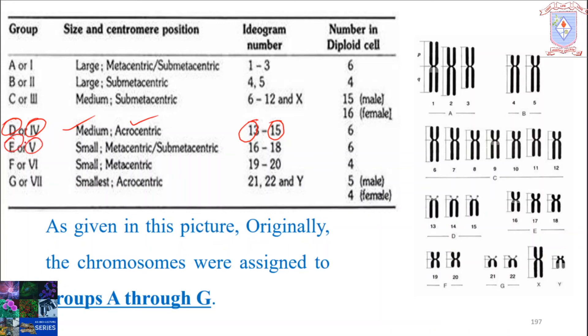Under Group E, or Group 5, the 16th, 17th, and 18th chromosomes are present. They are small in size and metacentric. Chromosomes 19 and 20 come under Group F, or Group 6. They are small in size and metacentric. The 21st, 22nd, and Y chromosomes are assigned under Group G, or Group 7. These chromosomes are the smallest and they are acrocentric.